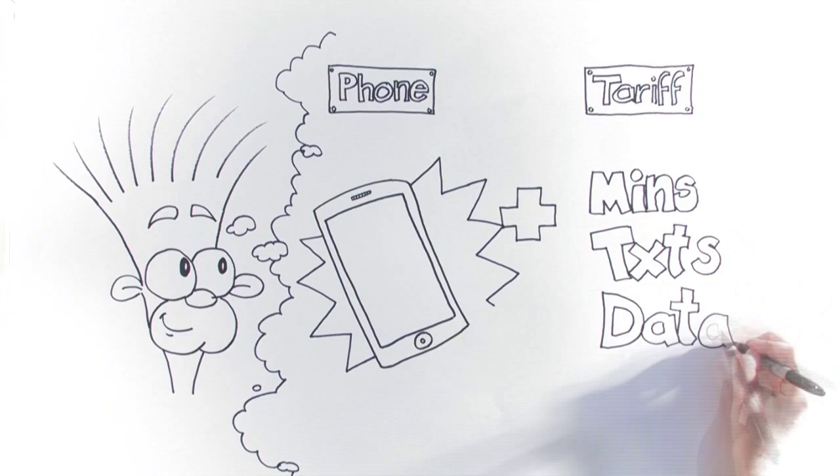As you know, traditional contracts work like this: you get a phone and you get a tariff. The costs of these make up your line rental.